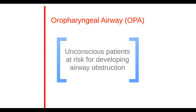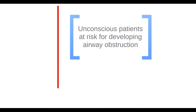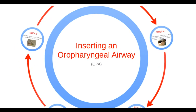The first basic airway adjunct is a device called an oral pharyngeal airway, or OPA, and it's used in unconscious patients who are at risk of developing airway obstruction. Inserting an OPA is fairly simple with the right training.